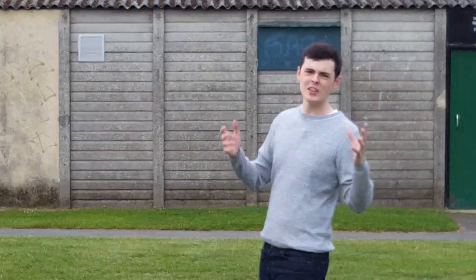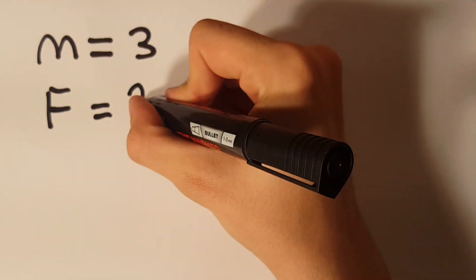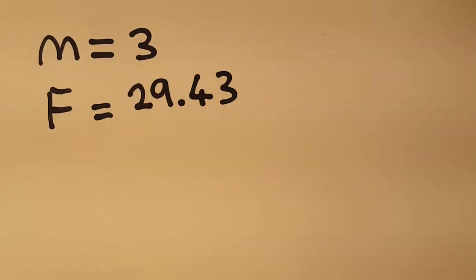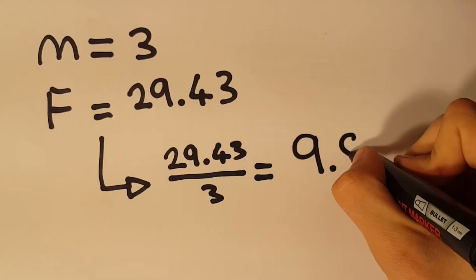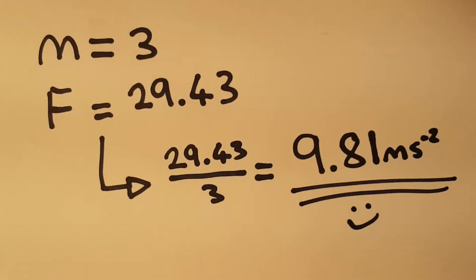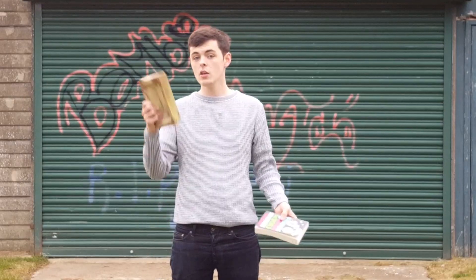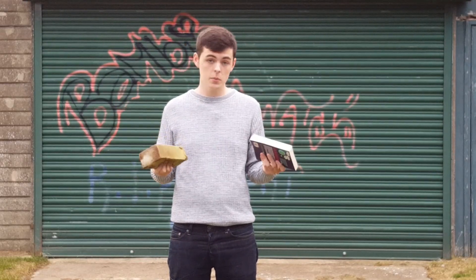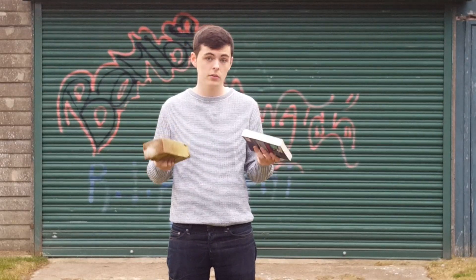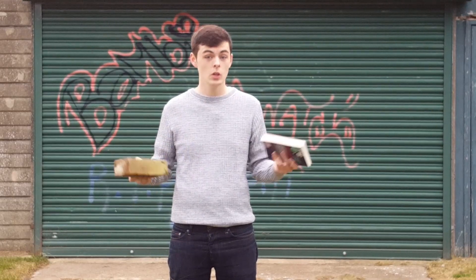Let's get wild. Let's take our current values and multiply them by 6. That would mean M equals 3 and F equals 29.43. We divide and find that A is still 9.81 meters per second squared. So we can increase or decrease the mass of an object however we want, but since force is directly proportional to mass, the acceleration due to gravity will always stay the same. Therefore, objects will fall at the same rate.